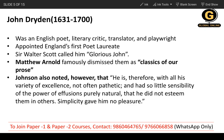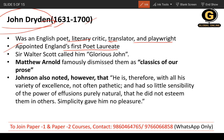Now moving on to our main topic, John Dryden. John Dryden was born in 1631 and died in 1700. He was an English poet, literary critic, translator, and playwright. He was appointed as England's first Poet Laureate — a great achievement. Sir Walter Scott famously called him 'Glorious John.'